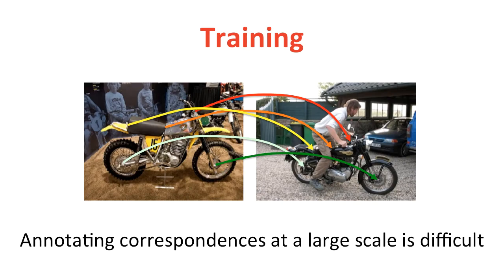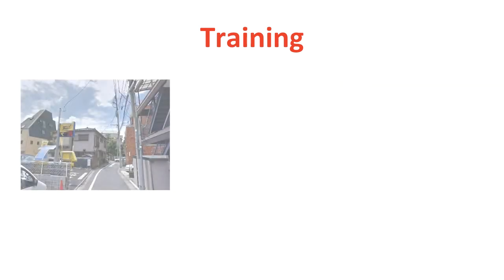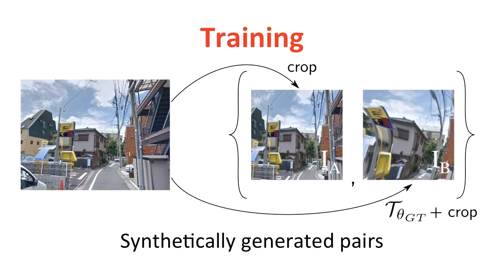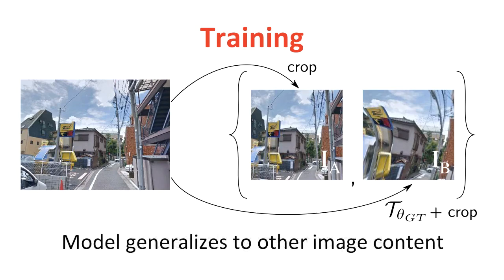One of the difficulties of this problem is finding suitable ground-truth data for training. To address this problem, we train our model from synthetically-warped images from street view, where the ground-truth transformation is known. Thanks to our matching layer that captures geometric image correspondences independently of the actual image content, we show that our model generalizes to unseen objects at test time.